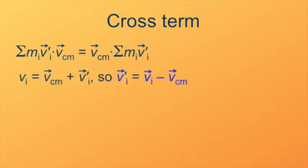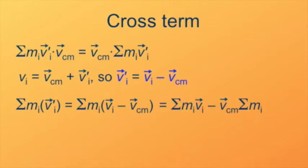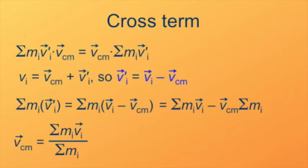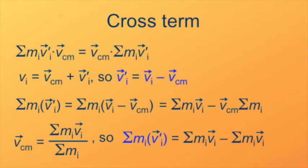Recall how we've defined v sub i and v prime sub i. v sub i equals v sub cm plus v prime sub i, or equivalently, v prime sub i equals v sub i minus v sub cm. Substituting that expression and distributing the mass gives two summation terms. The first is the sum of the momenta of each particle with respect to the center of mass. The second is v sub cm times the total mass. Since v sub cm is the total momentum divided by the total mass, that second term just becomes the total momentum. So the sum equals total momentum minus total momentum, which is zero. Since that factor is zero, the cross term is zero times v sub cm, which is still zero.